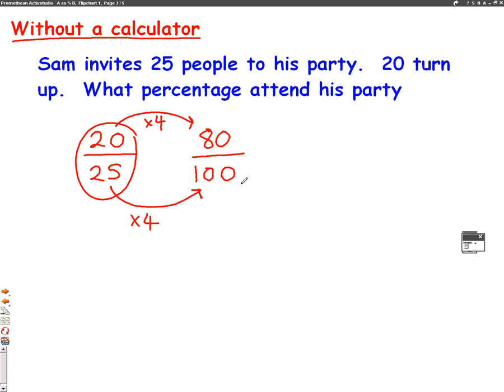And that's really good because if 100 is on the bottom, then we know that it's just whatever the number is at the top. So the answer is 80%. So 80% of people attended his party. So this is without a calculator. The job is to make the bottom number of the fraction 100.